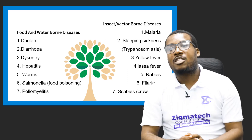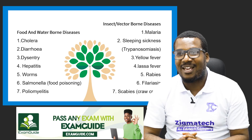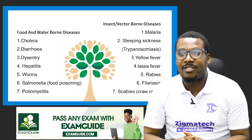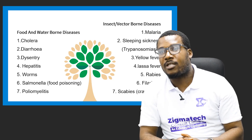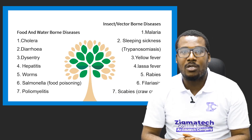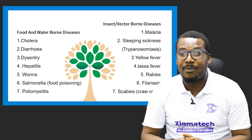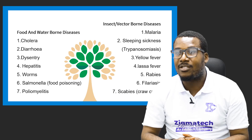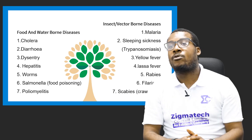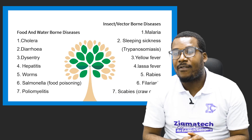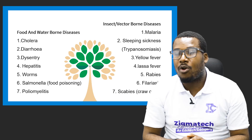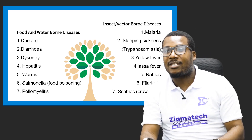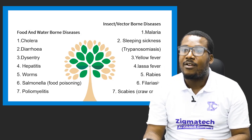The third category is insect and vector-borne diseases. The mosquito is a key vector organism — it kills 600,000 people in Africa alone every year, and about 3 million worldwide. Diseases in this category include malaria, sleeping sickness (trypanosomiasis), yellow fever, Lassa fever, rabies, filariasis, and scabies — all brought by insects and vector organisms.